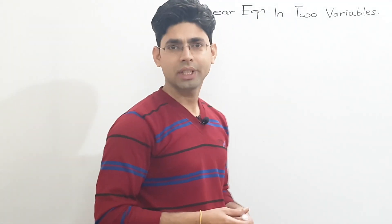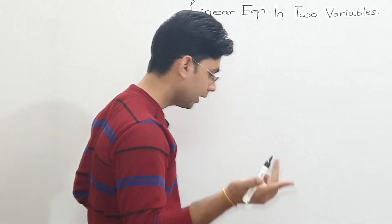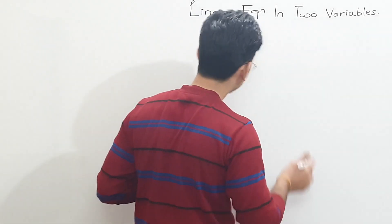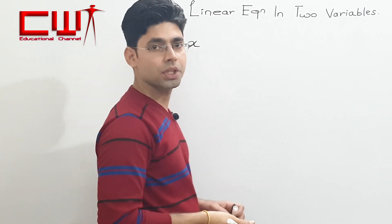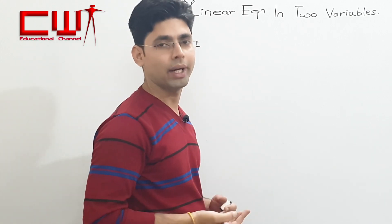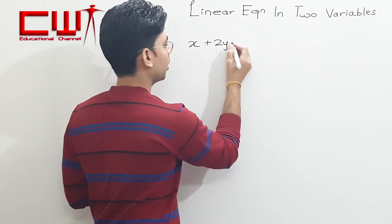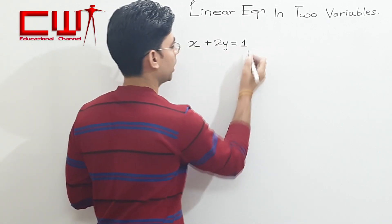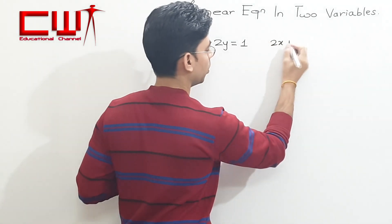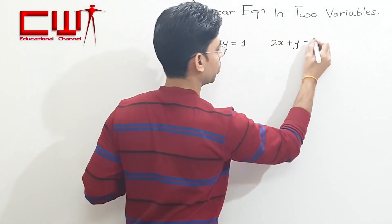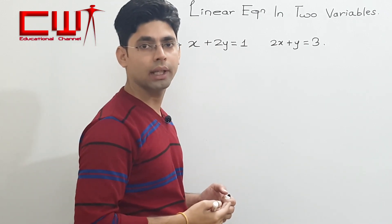Let's solve another problem using Cramer's rule. So now we will take two equations. Let's take two simple equations so that you can understand Cramer's rule better. Let's take x plus 2y is equal to 1 and 2x plus y is equal to 3. These are the two equations which we will solve using Cramer's rule.